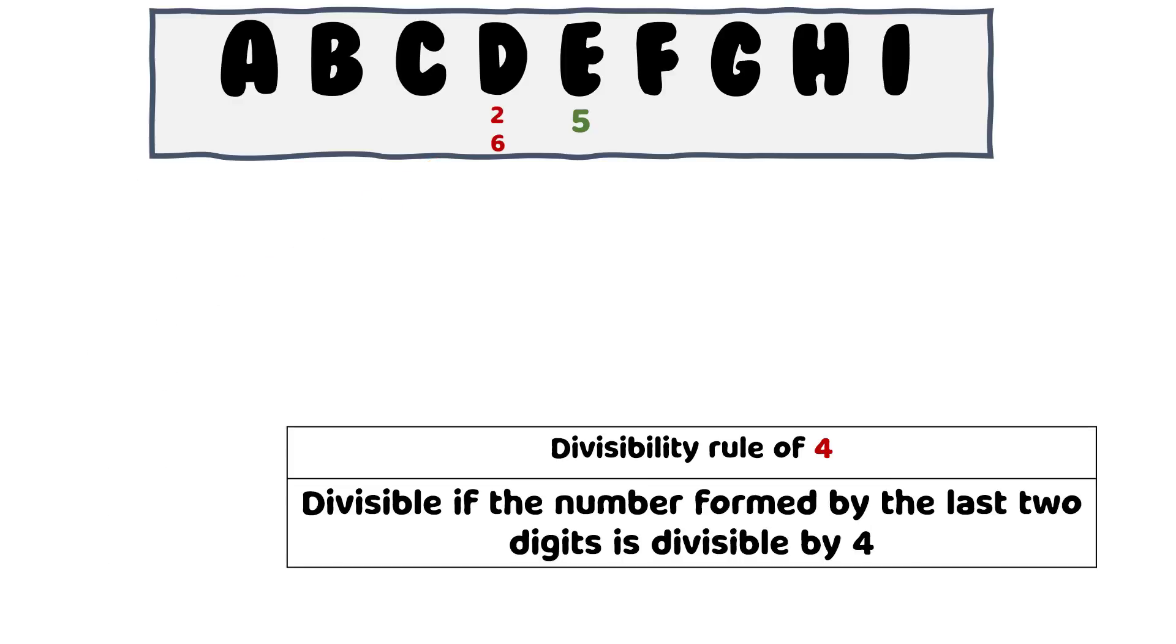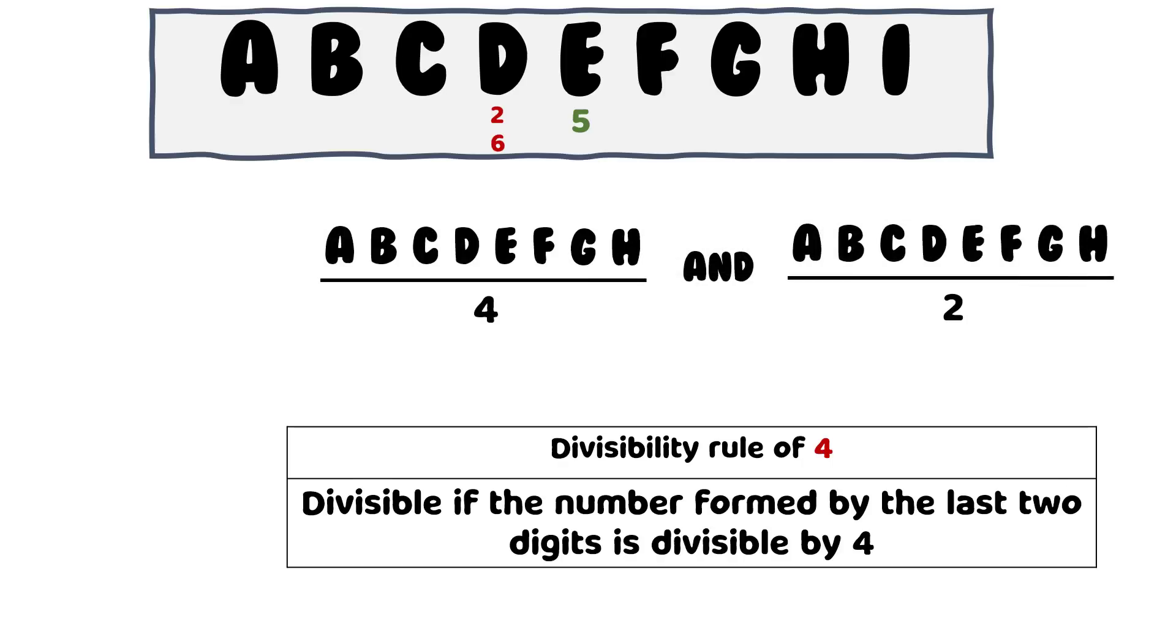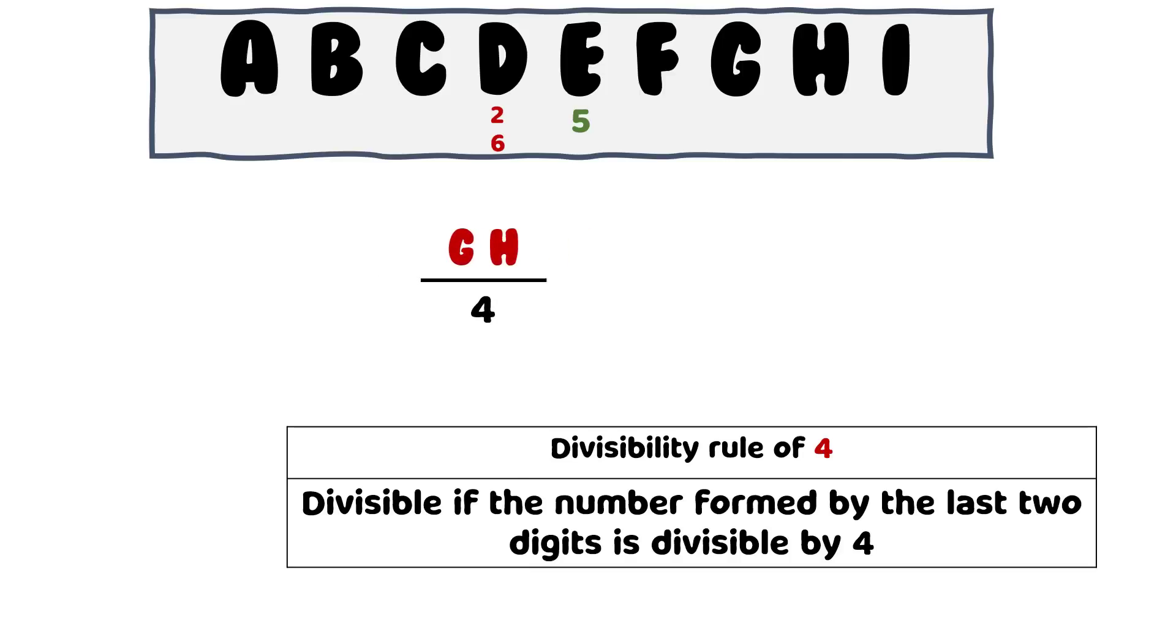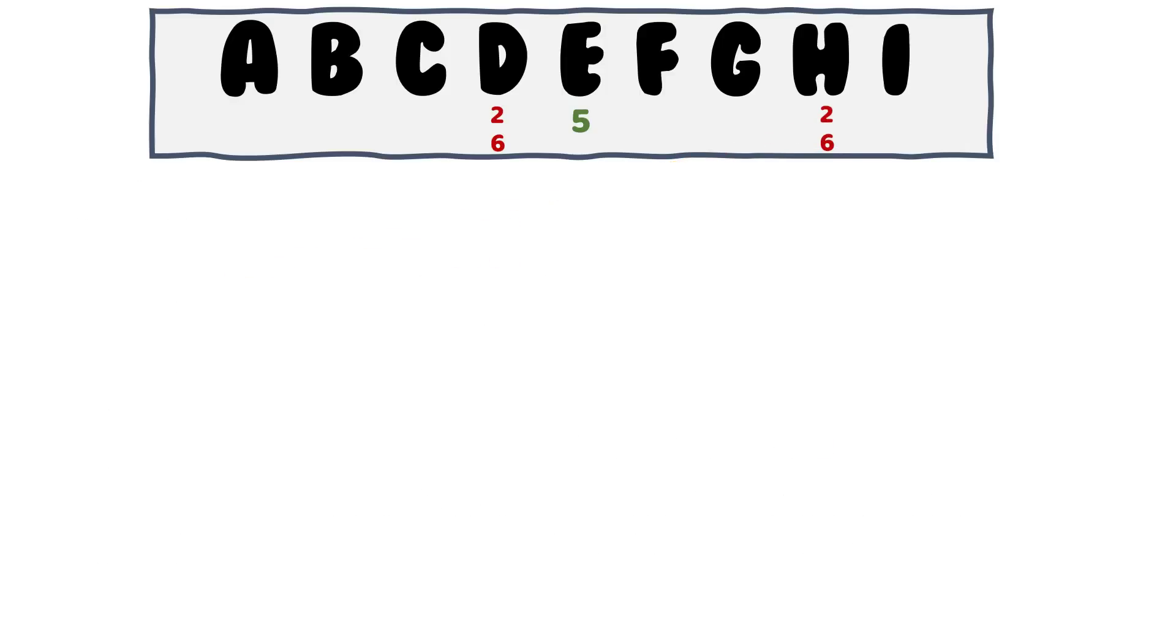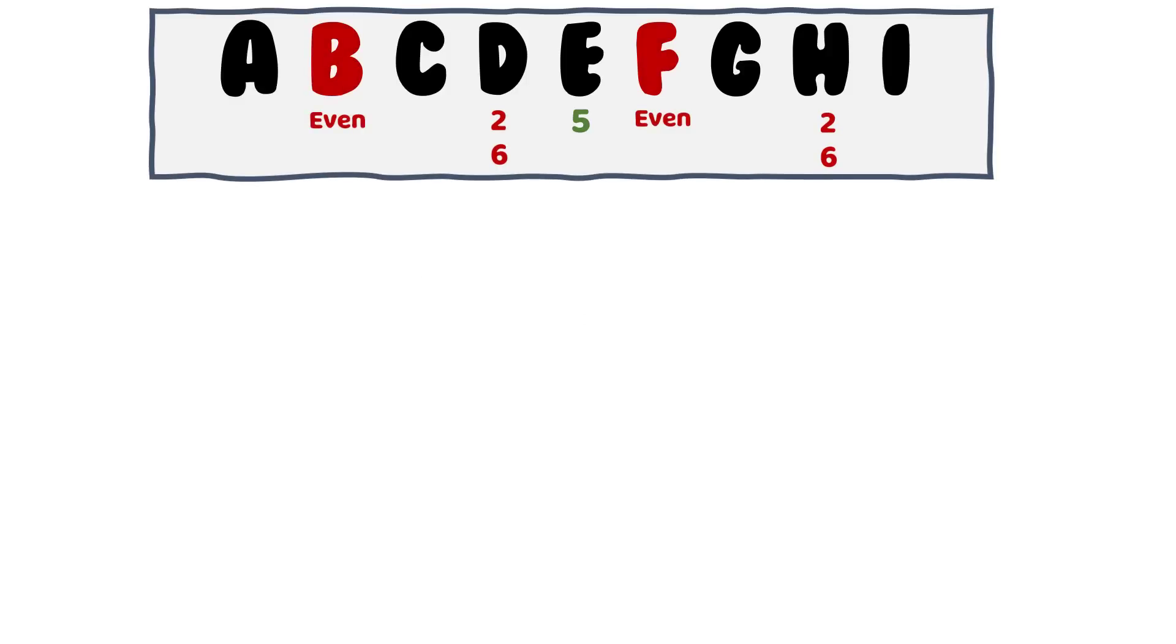The same divisibility test of 4 can also be applied on this number with 8 digits. If this 8 digit number is divisible by 8, then it must be divisible by 4 and 2 as 4 and 2 are the factors of 8. And this number would be divisible by 4 only if the number formed by the last two digits GH is divisible by 4. Once again, it's a combination of an odd and an even number. So the even number can only be 2 or 6 just like we saw before. So D and H will mutually get the numbers 2 or 6. Now, we are left with 2 even numbers that's 4 and 8. So the remaining 2 even spots B and F will mutually get the remaining 2 even numbers 4 or 8.